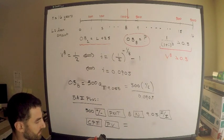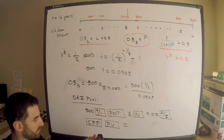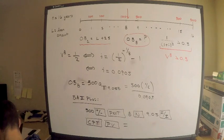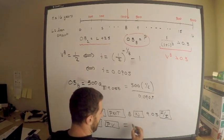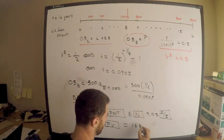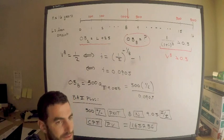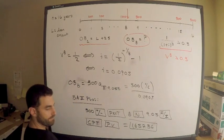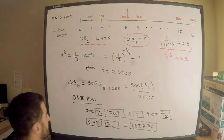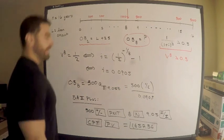Entering 300 +/- PMT, 8 N, 9.05 I/Y, then Compute PV gives approximately 1657.36. One annoyance on this exam is knowing where to round — keeping four decimal places is generally acceptable. The bottom line: you should get about $1,660 for the outstanding balance at year eight.